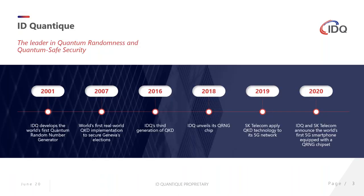ID Quantique has been around for quite a while with a number of significant inventions and innovations, starting in 2001 with the first devices, then the first QKD systems, and starting to be used by actual financial institutions in 2007. Quantum random number generators, as they became smaller, were progressively integrated in industrial setups like SK Telecom, which implemented QKD technology in their 5G networks last year. This year, SK Telecom announced the world's first 5G smartphone equipped with QKD.